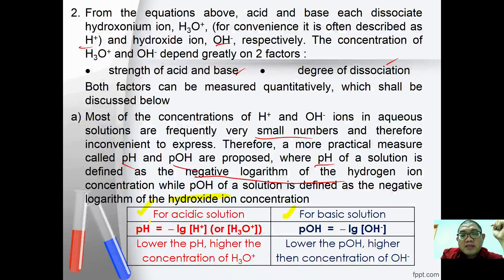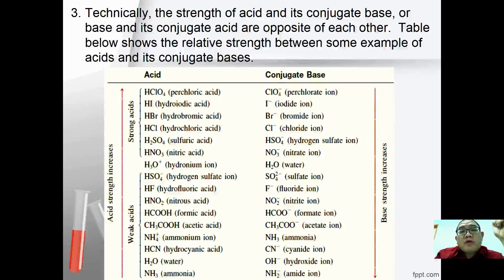Generally, the lower the pH, the higher the concentration of H₃O⁺. Similarly, the lower the pOH, the higher the concentration of OH⁻. The strength of an acid and its conjugate base, or a base and its conjugate acid, are opposite to each other.